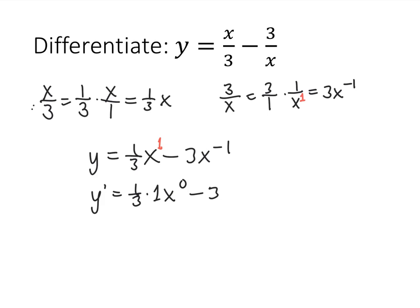Minus 3 is again a constant multiple, so the minus 1 comes down, and I get x to the minus 2. Remember that when we use the power rule, we subtract 1 from the exponent, and when I subtract 1 from negative 1, I get negative 2.